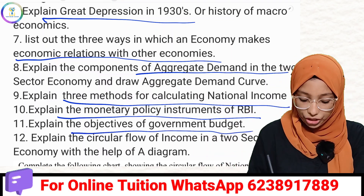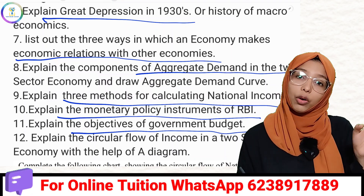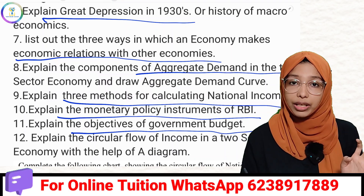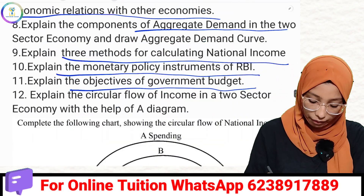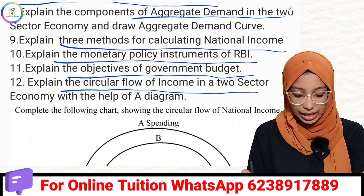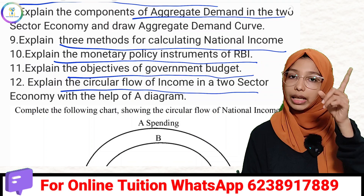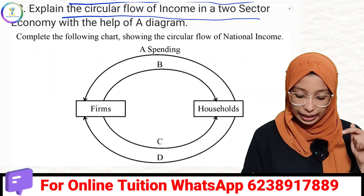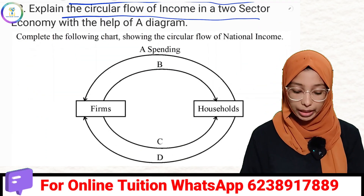The objective of the government budget is to achieve the stability function. The circular flow of income in the two-sector economy will be explained. You can also calculate this using a diagram.